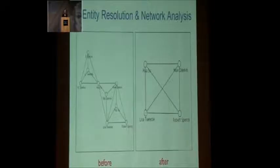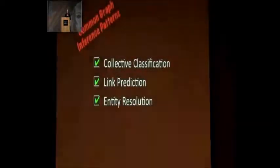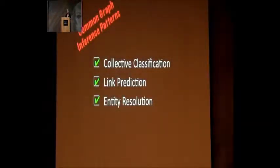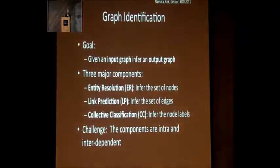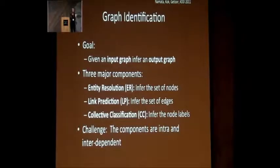Entity resolution is one of my favorite problems — we've done a long tutorial on it available from my website. These three — node labeling, link prediction, and entity resolution — are graph analysis 101 micro problems. I personally really like the idea of doing all of them at once, which I call graph identification: doing entity resolution, link prediction, and node labeling all at the same time. The challenge is that all of them are interdependent.